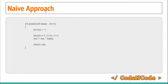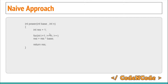In the brute force approach, you are given a base and have to calculate base raised to power n. What we do is initialize the result to 1, then run a loop from 1 to n, and each time multiply base with result, and finally return result. The overall complexity is O(n), that is linear in n.